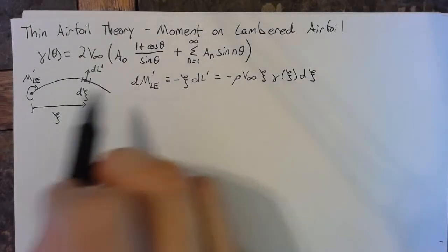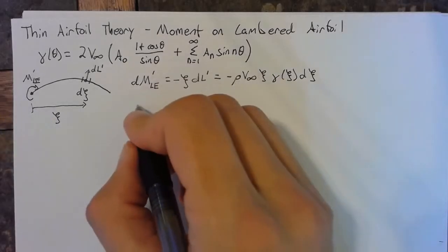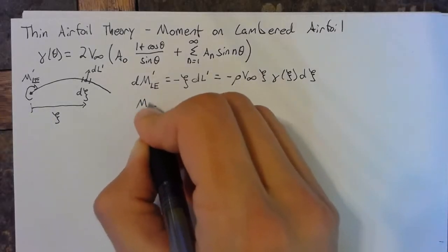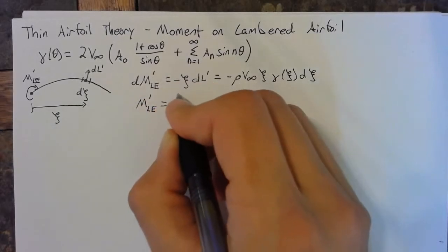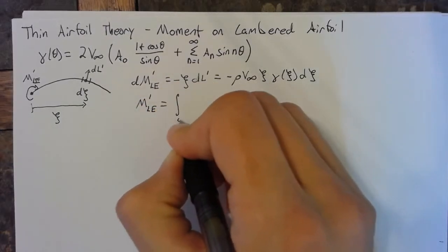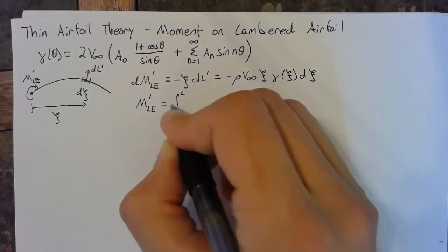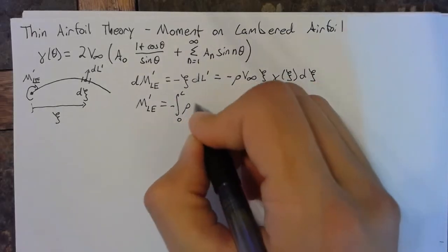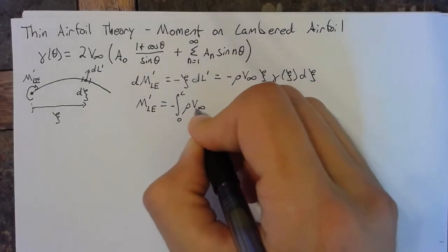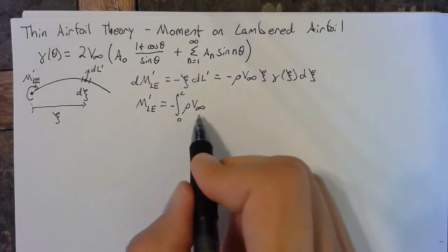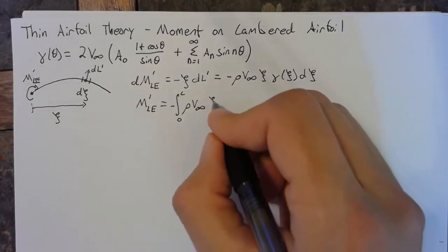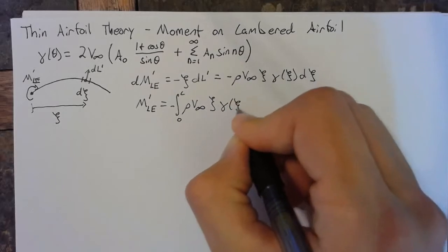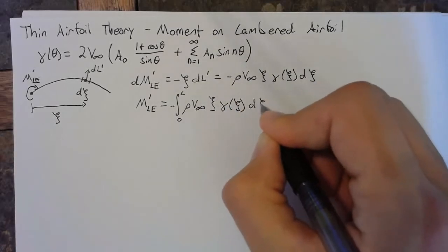In order to evaluate the entire moment about the leading edge, we simply integrate over our chord. This will be the integral from 0 to c of ρ V∞ times ξ times γ(ξ) dξ.